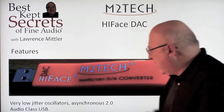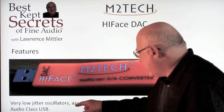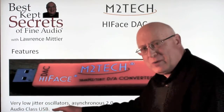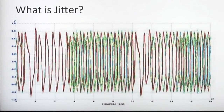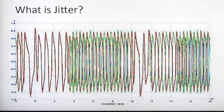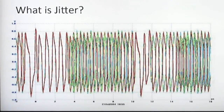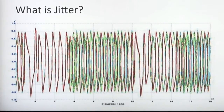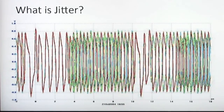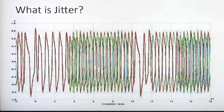The features include very low jitter oscillators and asynchronous 2.0 audio class USB. What is jitter? In digital to analog conversion of signals, the sampling is normally assumed to be periodic with a fixed period — the time between every two samples is the same. If there is jitter present on the clock signal to the analog to digital converter or digital to analog converter, the time between samples varies and instantaneous signal error arises.